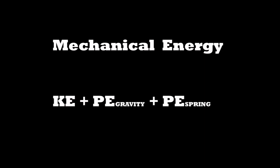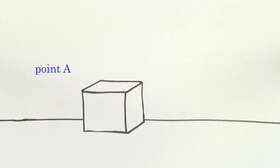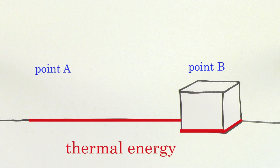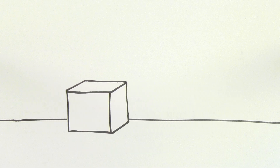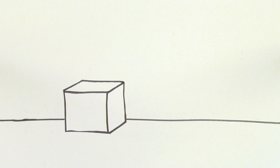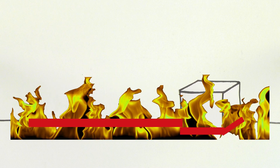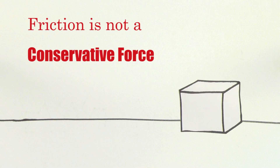An example of a non-conservative force is friction. If I move a mass along a table from point A to point B, friction does a certain amount of negative work on the mass, which creates some thermal energy. If instead of going straight from A to B, I make the block go from A to B back to A over and over again, the work done by friction will become larger and larger and it'll generate more and more thermal energy. Because the work done by friction depends on the path taken, friction is not a conservative force.